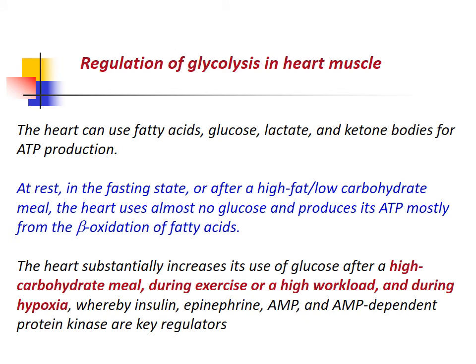The heart can use fatty acids, glucose, lactate, and ketone bodies for ATP production. At rest in the fasting state or after a high-fat, low-carbohydrate meal, the heart uses almost no glucose and produces its ATP mostly from beta-oxidation of fatty acids. The heart substantially increases its use of glucose after a high-carbohydrate meal, during exercise or high workload, and during hypoxia — regulated by insulin, epinephrine, AMP, and AMP-dependent protein kinase.